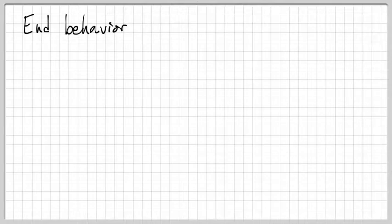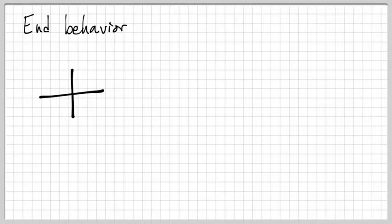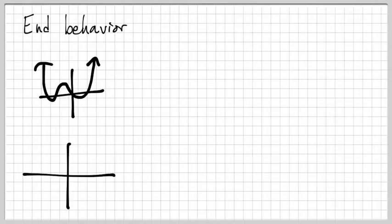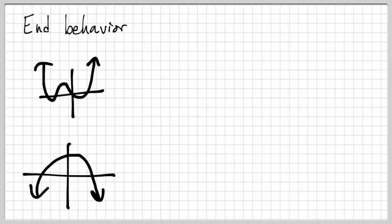What the heck does end behavior mean anyways? I want you guys to think about these different graphs. Let me draw some graphs. These are all polynomial functions.